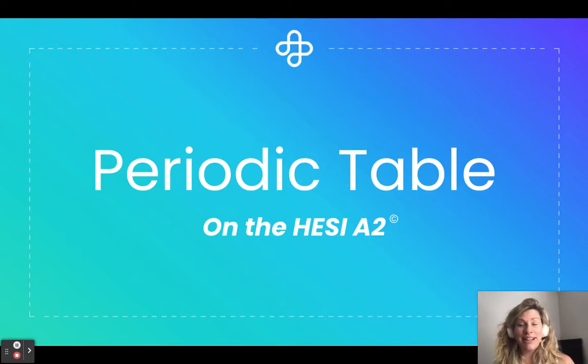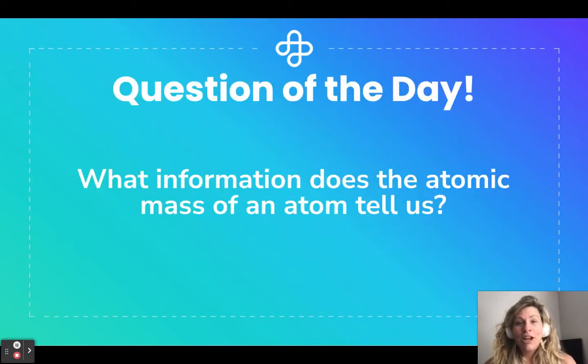And with that, let's go ahead and get started. So today's question of the day is, what information does the atomic mass of an atom tell us? Now, if you want to test yourself, you can pause here and see if you can come up with the answer on your own without even looking at the multiple choice answers. I'll also be going over some key pieces of information you can pull from the periodic table. So if you don't want that extra little piece of information before you figure out the answer, you can pause here and see if you can get it on your own.